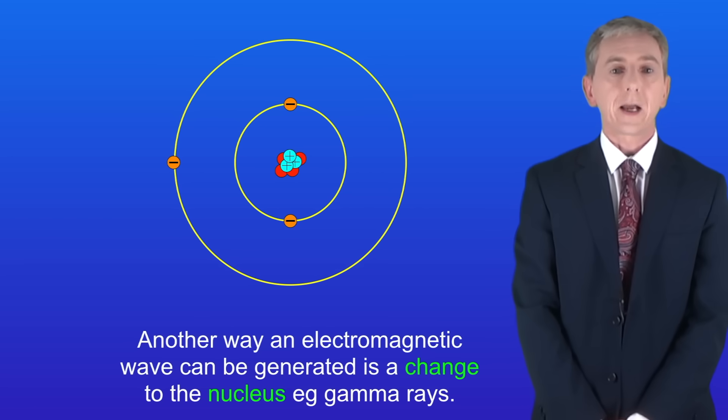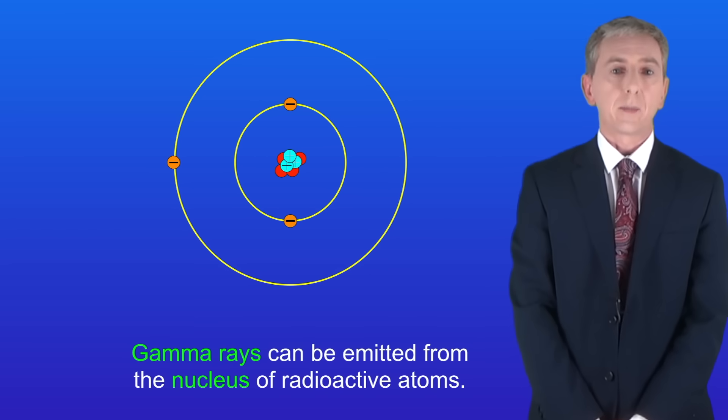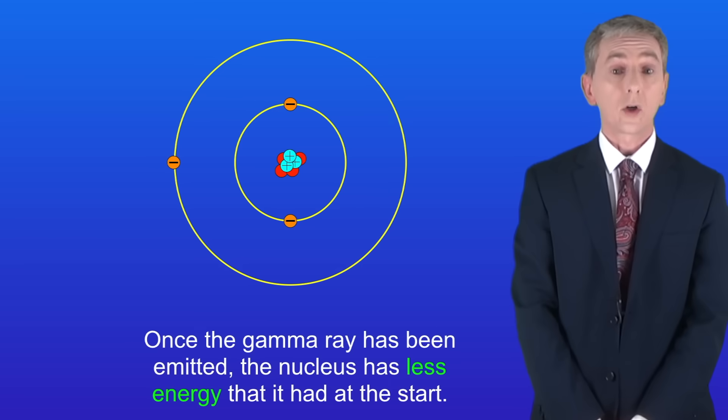Now another way an electromagnetic wave can be generated is a change to the nucleus. And a good example are gamma rays. Gamma rays can be emitted from the nucleus of radioactive atoms. Once the gamma ray has been emitted the nucleus has got less energy than it had at the start.